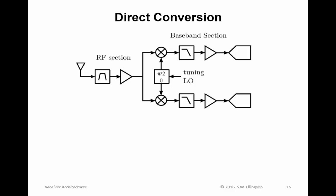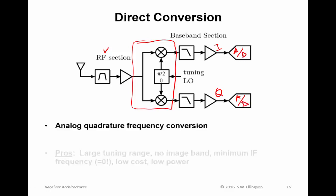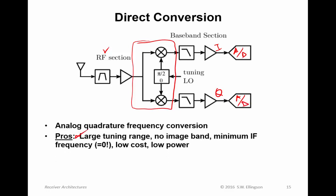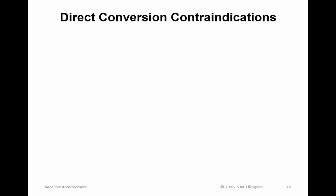Direct conversion architecture: we have an RF section and use quadrature down-conversion to obtain I and Q, which is then digitized. The advantages are very large tuning range, not impeded by superhet limitations; no image band because there's no IF; the minimum IF frequency is achieved — that is, zero; and it's low cost and low power. These are all great features of direct conversion architecture.